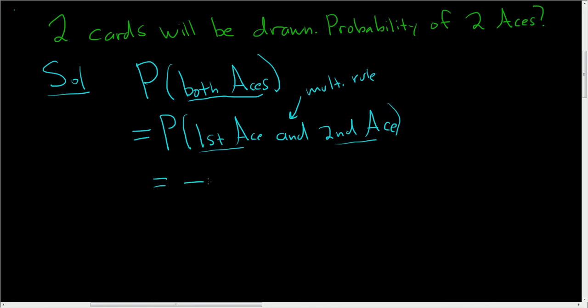So let's think. There are four ways to pick an ace and 52 ways to pick a card. So that first probability is 4 over 52. It's the number of ways to pick an ace divided by the number of ways to pick a card.